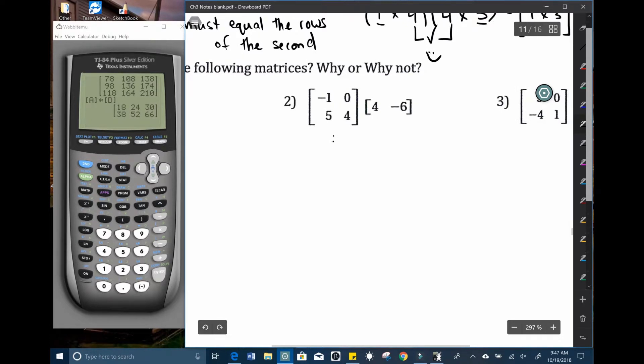Number two, we have a two by two. And we're going to multiply it by a one by two. Can we multiply? No, the rows are not equal to the columns. Rows not equal to columns.